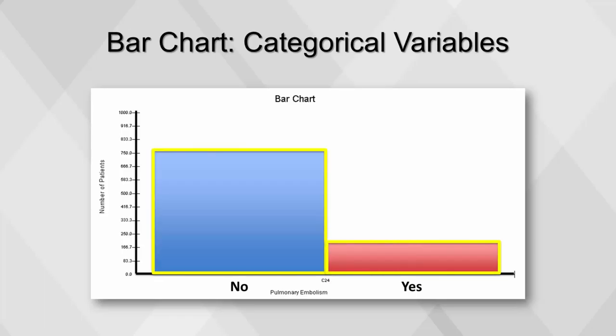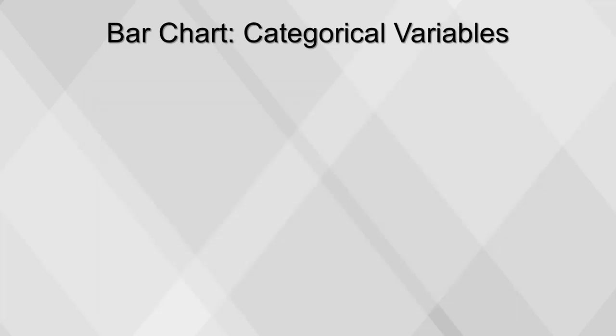Yes is coded as 1 and no is coded as 0. The frequency distribution of a binary variable shows the number of patients in each group. It's much easier to extract information from a bar chart than from a table.